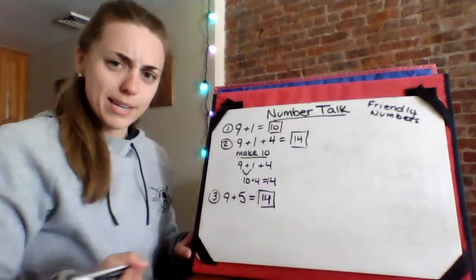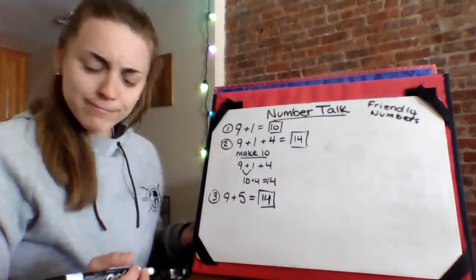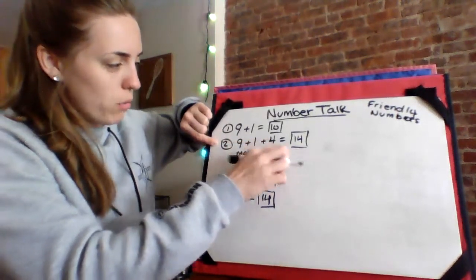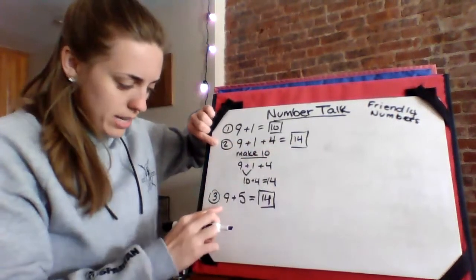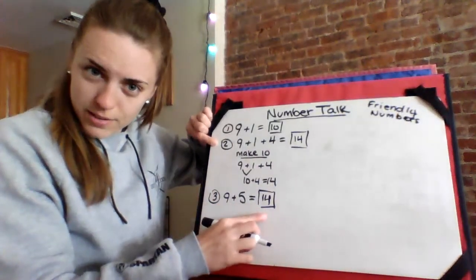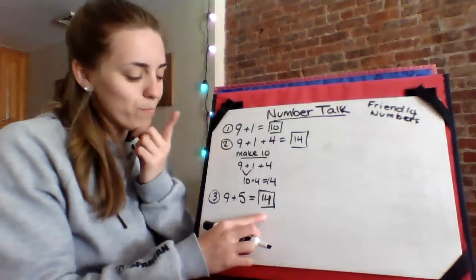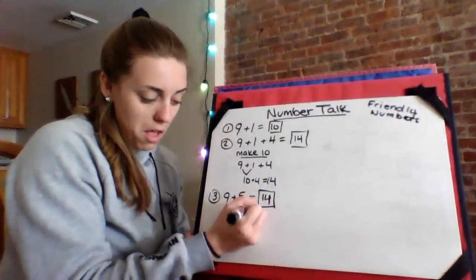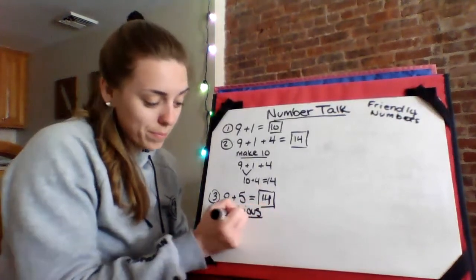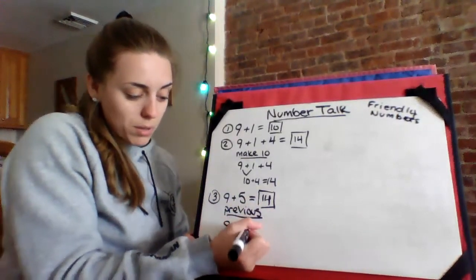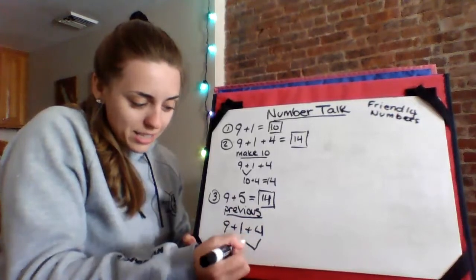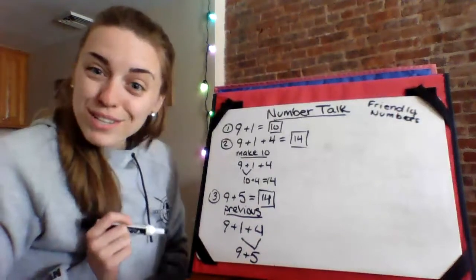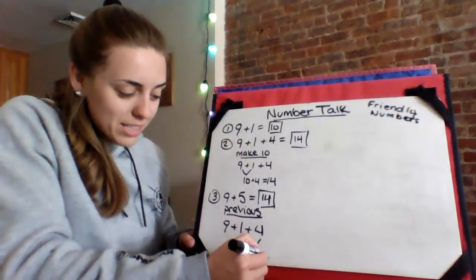What do you notice about that fourteen? Did you notice that number two, nine plus one plus four, was fourteen? And down here we have nine plus five is also fourteen. How could we use the previous one to help us solve? Nine plus one plus four is the same thing as nine plus five. So it's going to be the same answer.